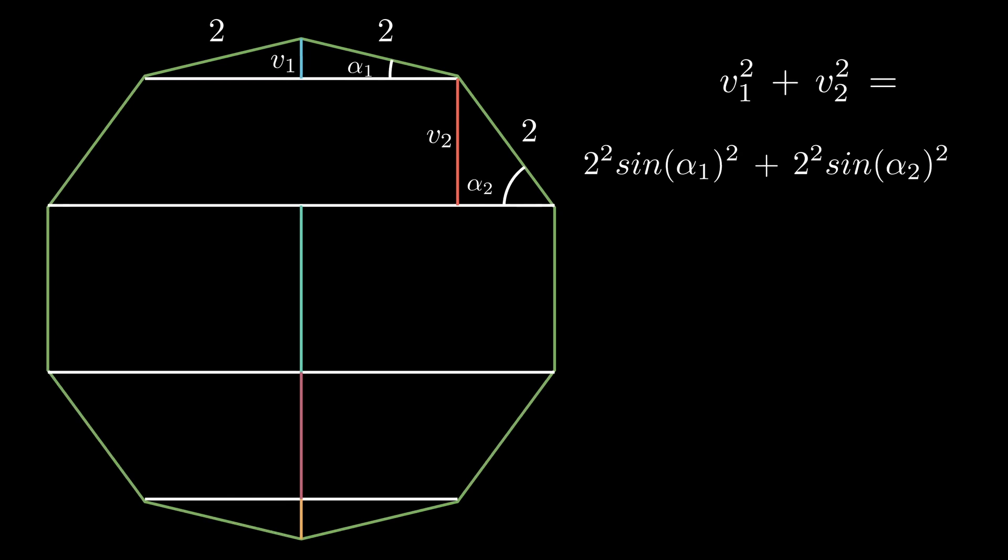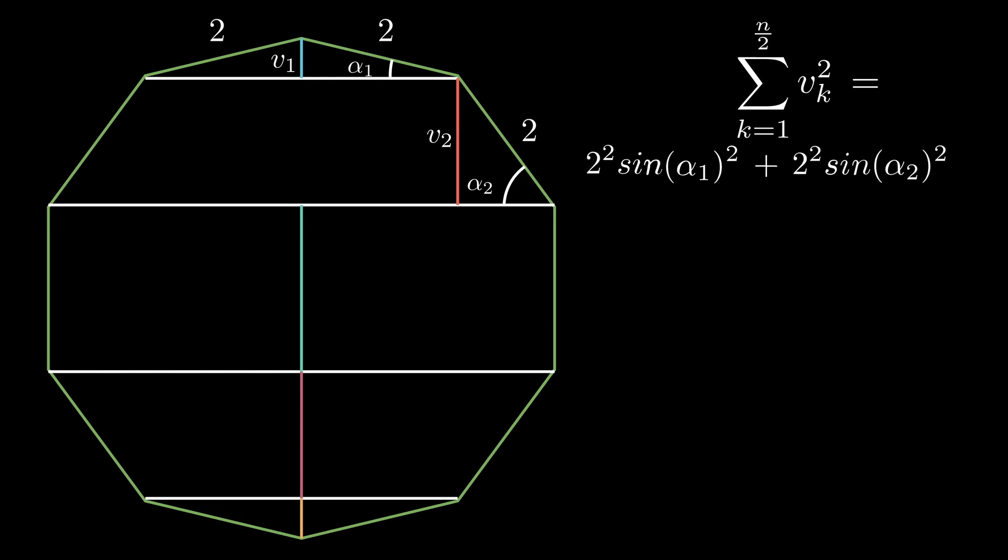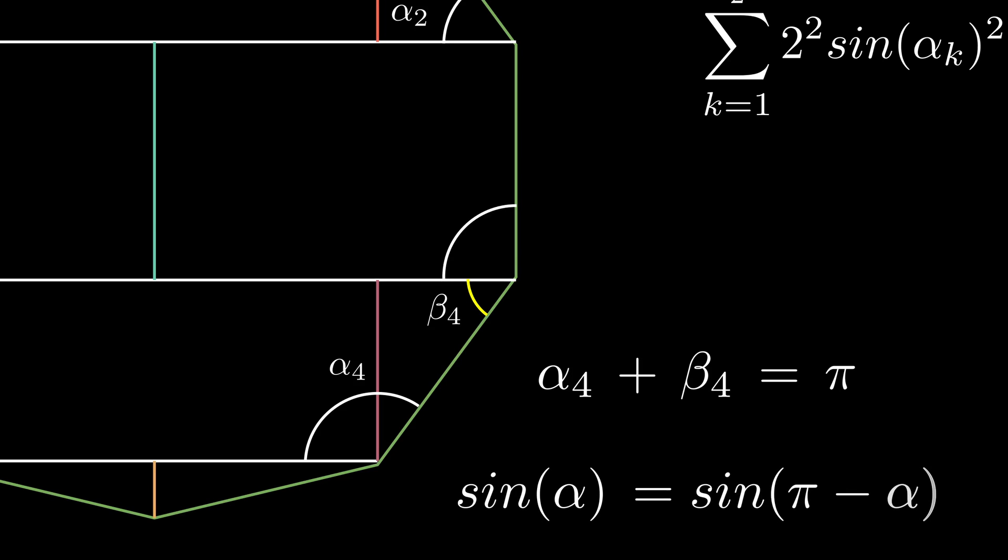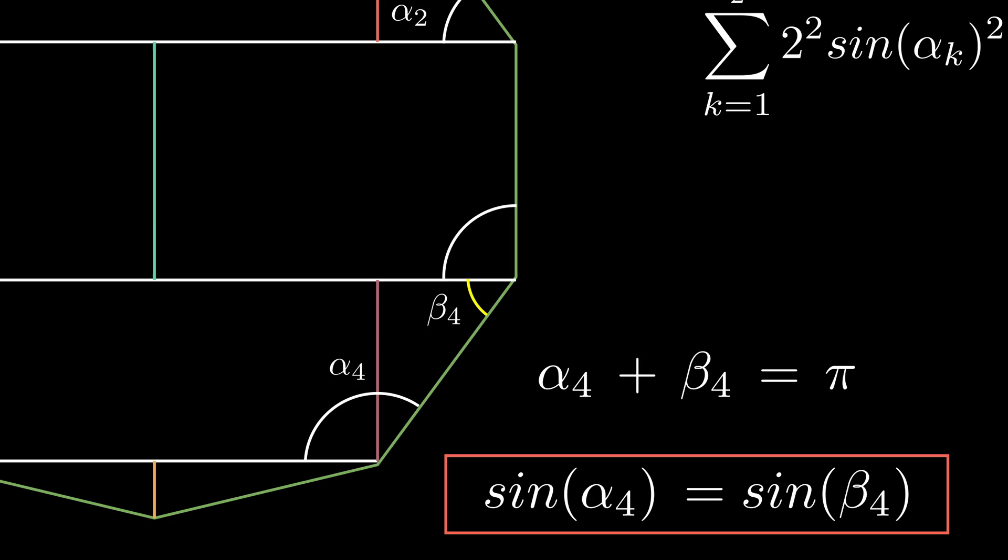Now we conjecture that it works the same for the other vertical segments. Oh, but what happens here? These obtuse angles are not inside the triangles, but the yellow angles are. However, together they add up to 180, and we should remember this sine identity. So, using these obtuse angles is fine for our calculation.